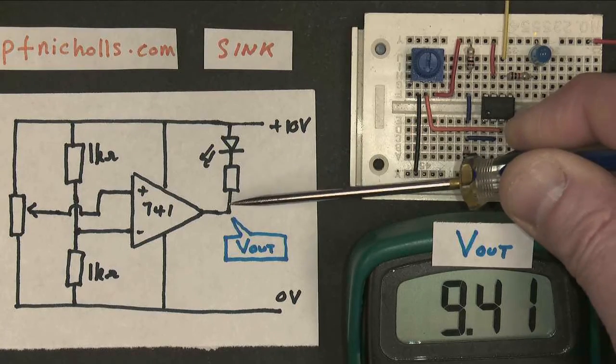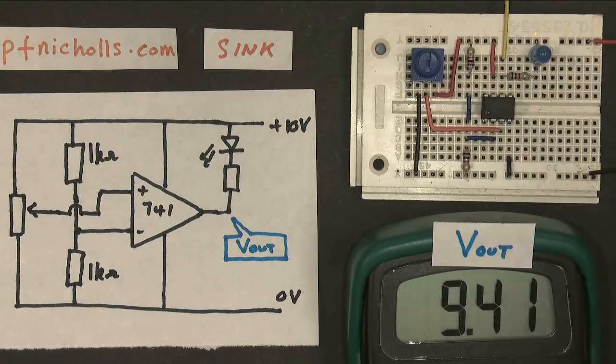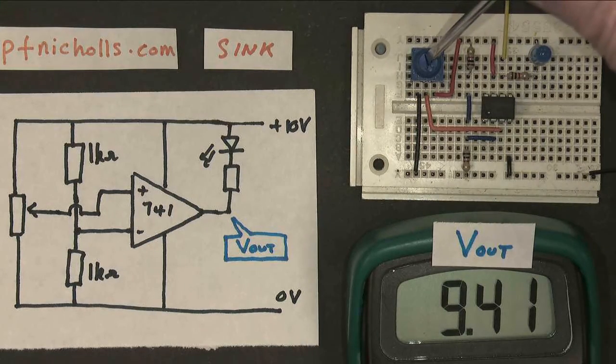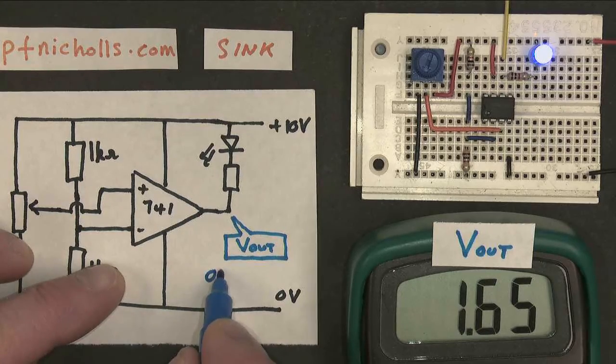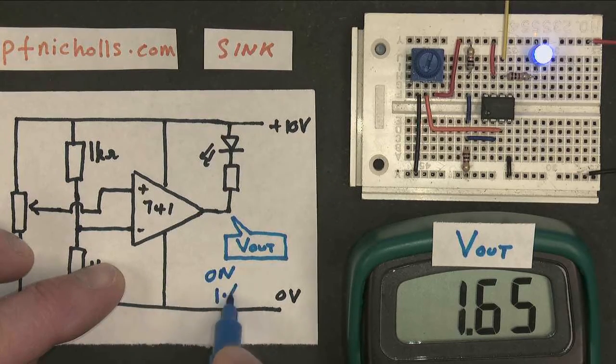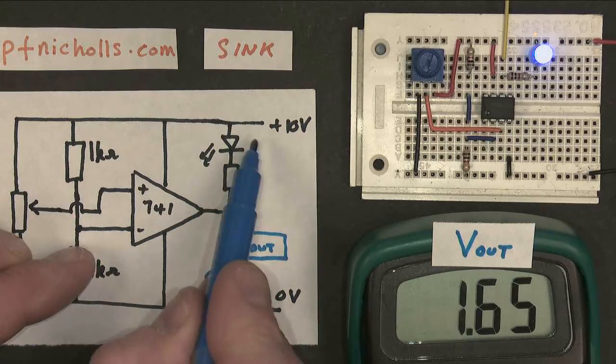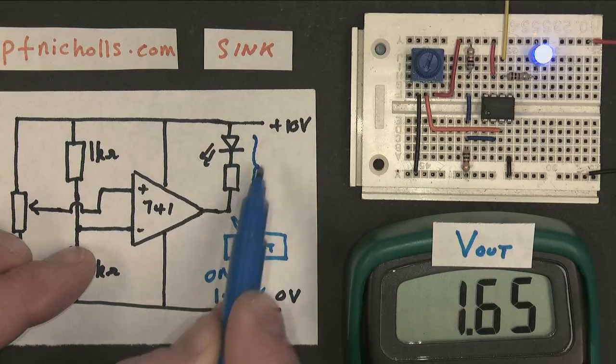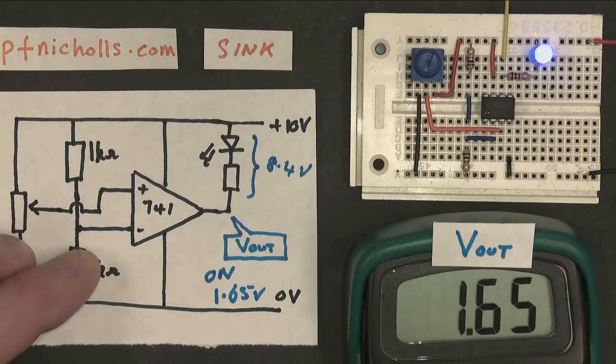If we want the LED to light up, we need to make this point here much lower. We need to make it a lower voltage. So if we adjust our potential divider circuit again, so the op-amp responds. Then what we find now is that the output voltage has gone down to about 1.6 volts. So this time, when the LED is on, the output is about 1.65 volts or so. And that means that the potential difference across here is around about 8.4 volts. And that potential difference means that current can flow.